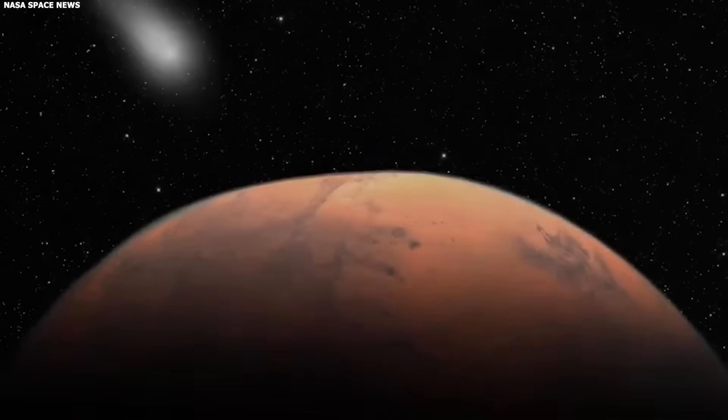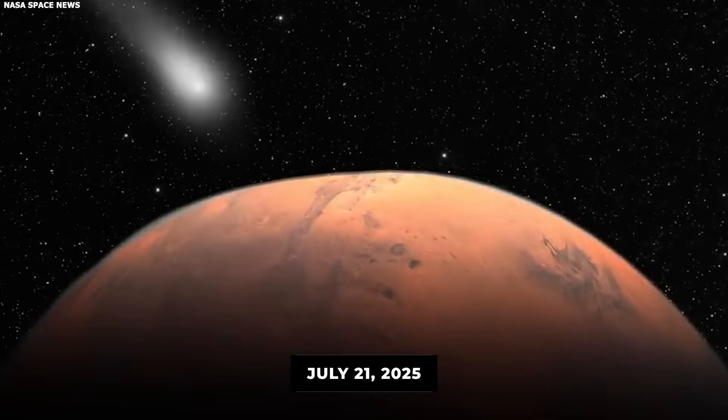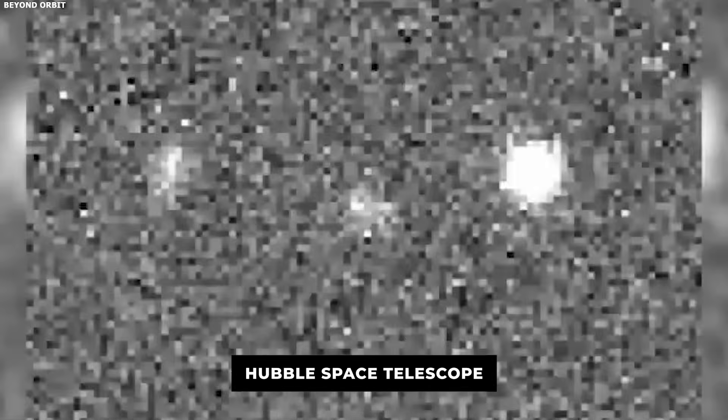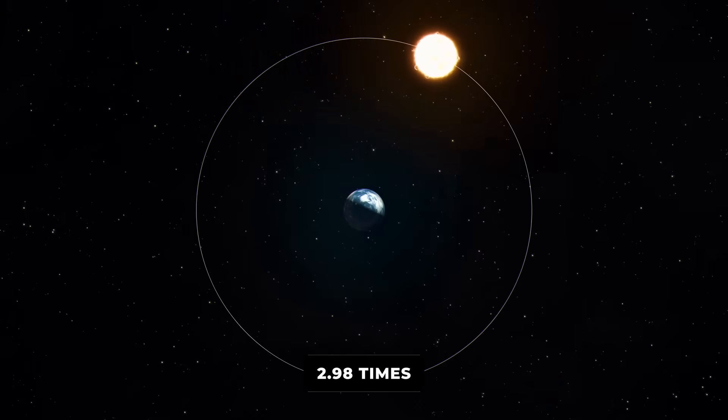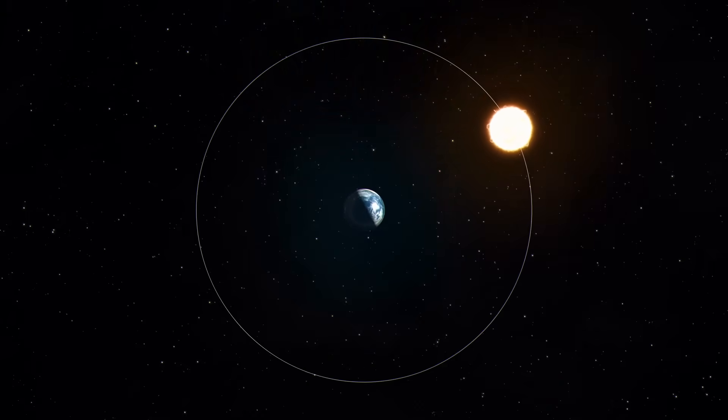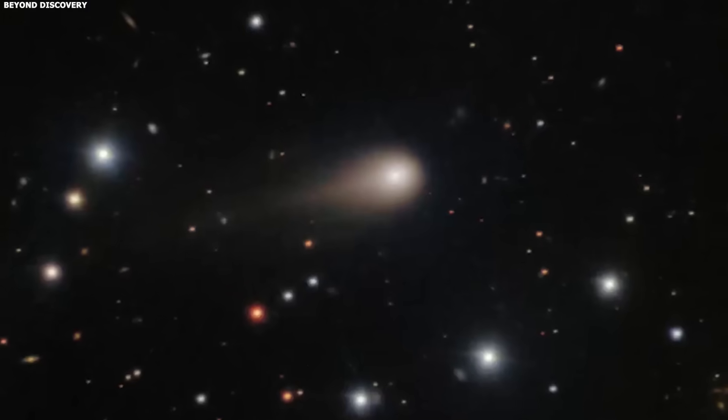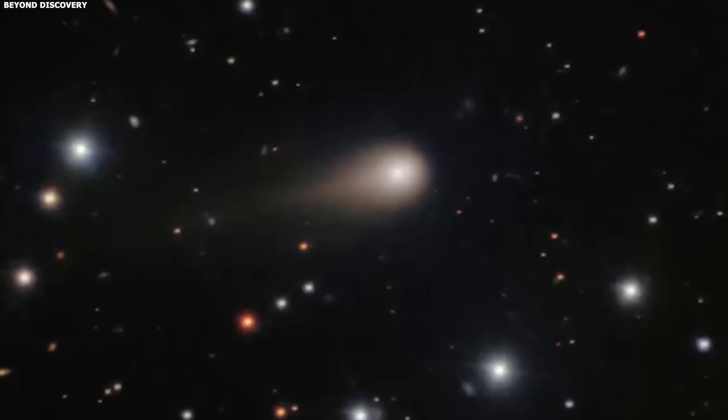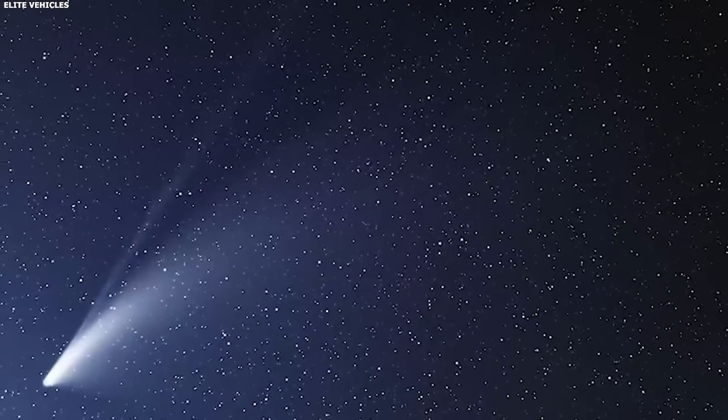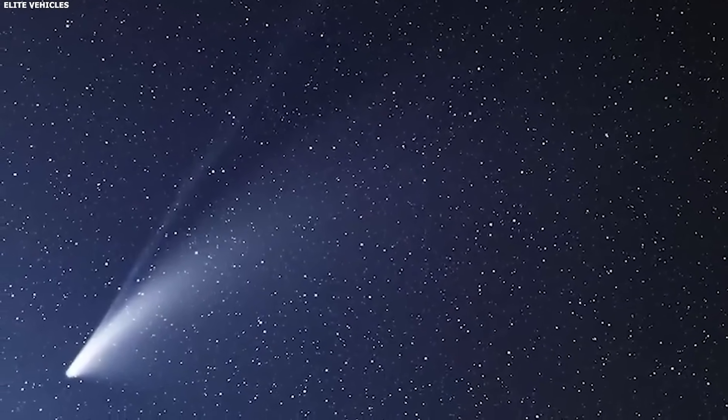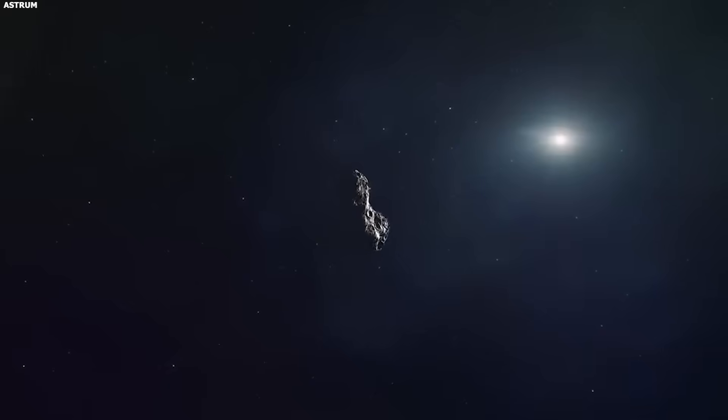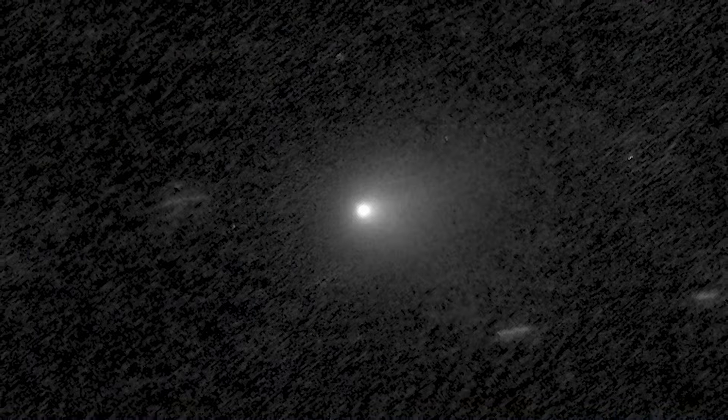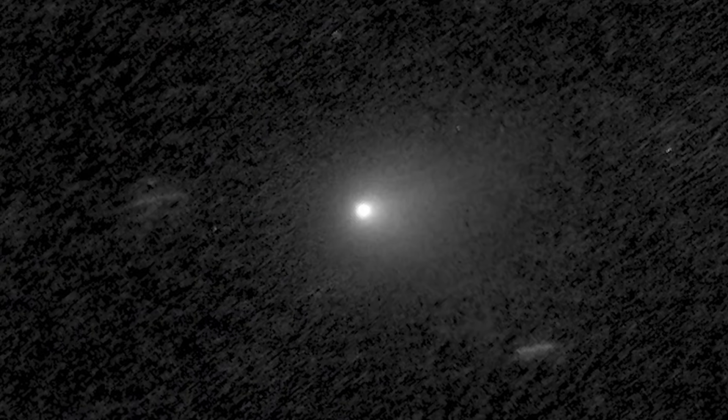3I Atlas doesn't do this. On July 21st, 2025, the Hubble Space Telescope captured an image of 3I Atlas. The comet was approaching the sun. It was about 2.98 times the Earth-sun distance away, and the image showed a bright teardrop-shaped glow extending toward the sun. Not away. Toward. The glow was obvious. Not subtle. Not a faint feature you need image processing to see. It's right there in the raw image. A bright, elongated structure pointing in the wrong direction.